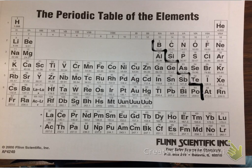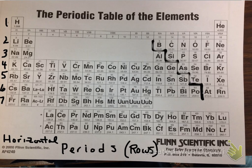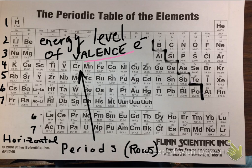The periodic table has seven horizontal rows known as periods. By finding an element and noting its period, we find that elements 57 through 71 and 89 through 103 come from within periods 6 and 7. So the bottom block at the bottom of the periodic table is a continuation of periods 6 and 7. By knowing the period, we can tell which energy level the outermost or valence electrons are located on.